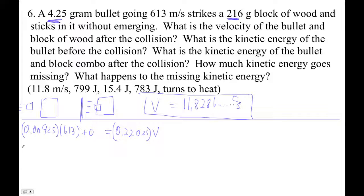And then it says, what's the kinetic energy of the bullet before the collision? What's the kinetic energy of the block? Right, so the bullet is 0.5 times 0.00425 times 613 squared. So 0.5 times 0.00425 times 613 squared is 798.509 joules. Which would be, I guess, 799.